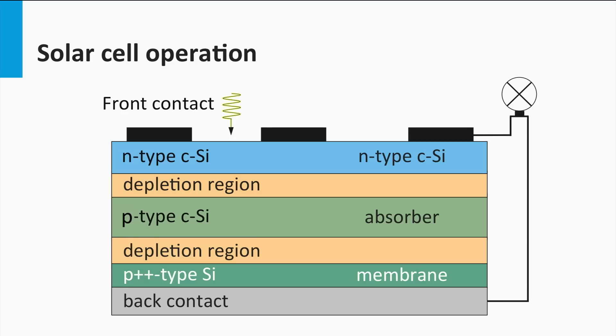Here we see the same structure, but then in a cross-sectional view. The light enters the solar cell from the front side, in this illustration that is the top side.